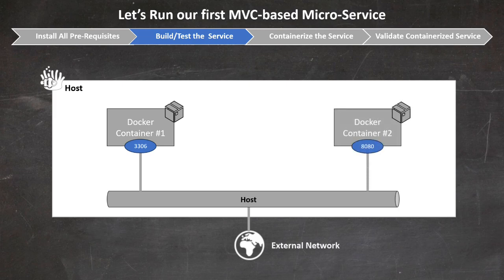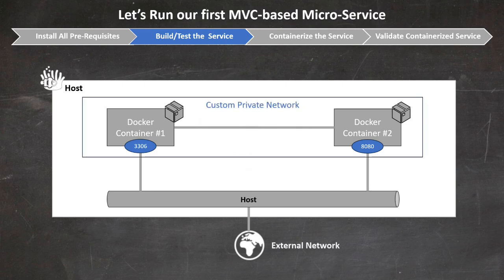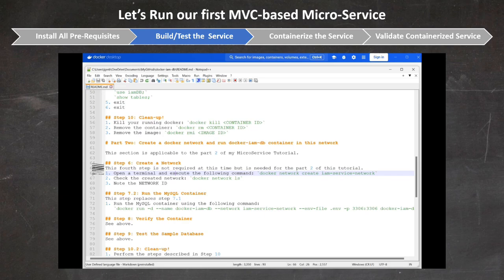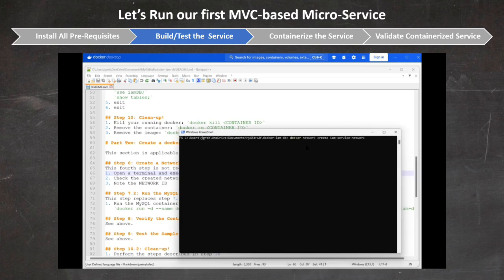The Bridge Network is the most common and default network created automatically when you deploy a container. It uses a software bridge that allows containers running on the same host to communicate using IP addresses. In our example, we're going to go one step further by creating a custom network that will enable better isolation between the containers of our first microservice. So let's go back to our first Docker image — the Docker IMDB — and create our custom network that we'll name IAMServiceNetwork. The steps are simple and documented in the README of our first code sample. You first create the network and then run your container specifying the network it should belong to.